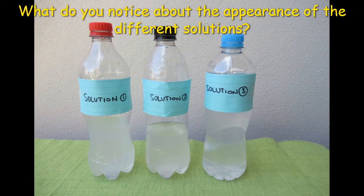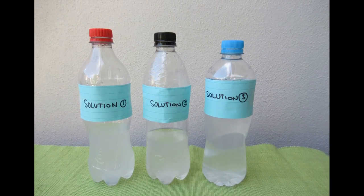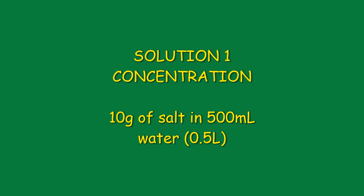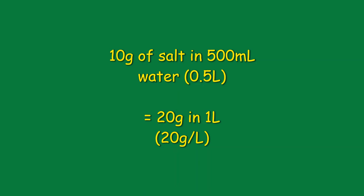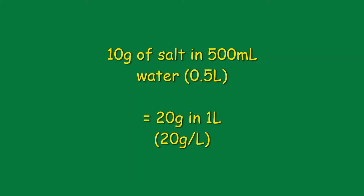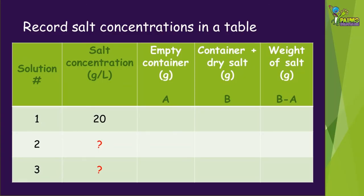Now you have all three solutions prepared — what do you observe about their appearance? Let's examine the concentration of the salt solutions that we've made. For solution one, we added 10 grams of salt to 500 ml of water. We talk about concentration in grams per litre. If we had made one litre of this solution instead, we would have had to add twice the amount of salt, meaning we have made a solution with a concentration of 20 grams per litre. We need to set up a table to record our results scientifically. If the concentration of solution one was 20 grams per litre, what would the concentration of solution two and three be? Pause the video here and have a think about this.